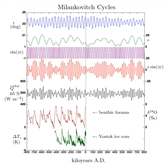Outer planets: Saturn's moon Titan has a cycle of approximately 60,000 years that could change the location of its methane lakes. Neptune's moon Triton has a variation similar to Titan's, which could cause its solid nitrogen deposits to migrate over long time scales.